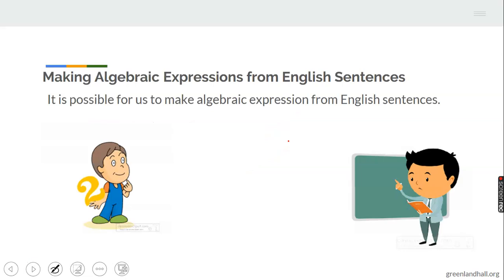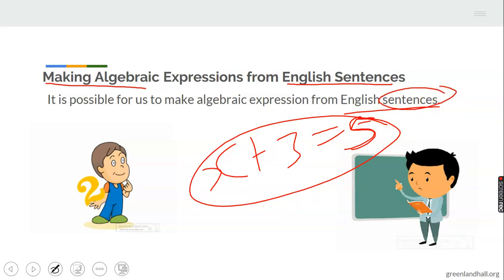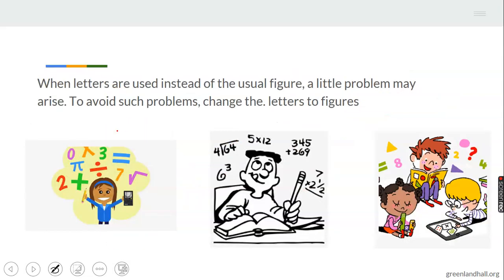Making an algebraic expression from English sentences, that's typically what we're going to be doing today. It means we are trying to make mathematical statements from English sentences. So it is very possible for us to make algebraic expressions from English language. That means they will not give you the exact math. Nobody's going to give you x plus 3 equals 5. No, you're not going to see this. But rather, it will be given in words, sentences. So your duty is to coin out the mathematical expression from each of the sentences that you are given. Don't get worked up, we're going to get through it.